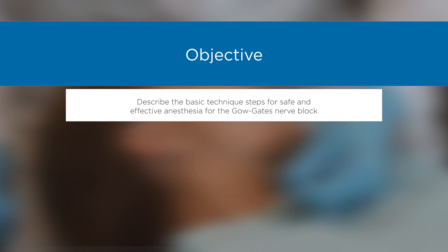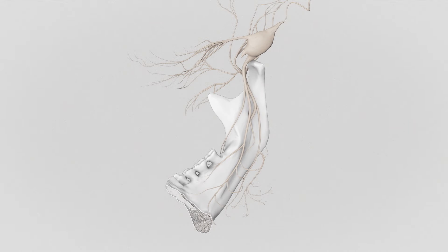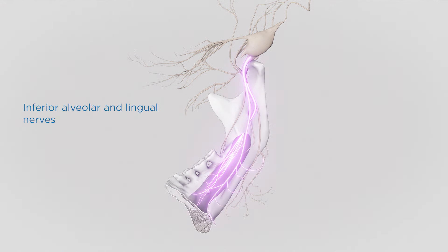Objective: Describe the basic technique steps for safe and effective anesthesia for the Gow-Gates nerve block. Mandibular anesthesia is notoriously difficult to achieve, and over the years new techniques have been developed to increase success — including the Gow-Gates block and the Akinosi block. These are especially helpful when patients cannot open wide enough. The Gow-Gates block is considered a true mandibular block, distributing anesthesia along the entire division of the mandibular nerve. It is ideal for patients needing multiple teeth done in a quadrant and when the traditional inferior alveolar block fails. In addition to the inferior alveolar and lingual nerves, the buccal and auriculotemporal nerves are often blocked — the buccal nerve approximately 70% of the time.